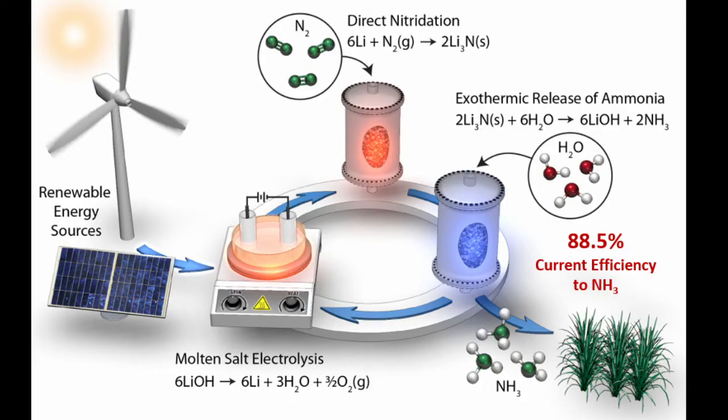In our new approach we have developed an electrochemical cycle to circumvent the hydrogen evolution reaction entirely. In the first step we electrolyze lithium hydroxide to produce lithium metal as an active surface. We then use the lithium metal to break the strong molecular nitrogen triple bond, forming lithium nitride in step 2.